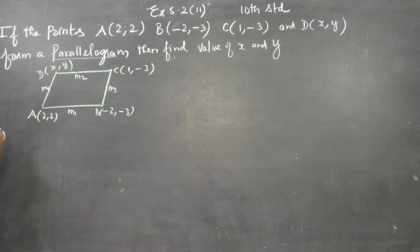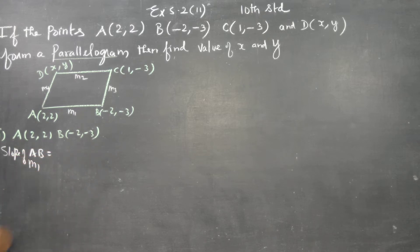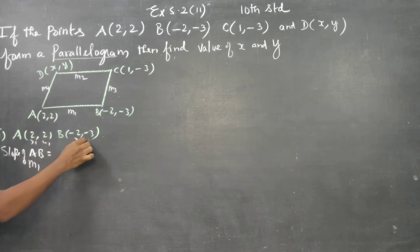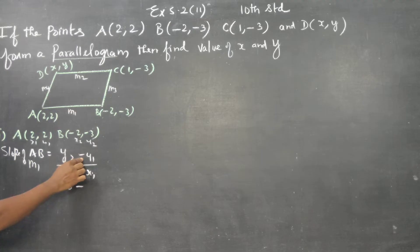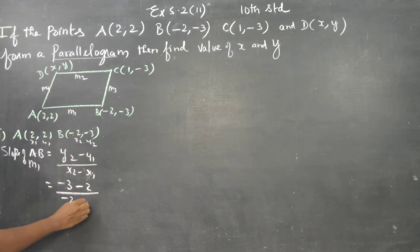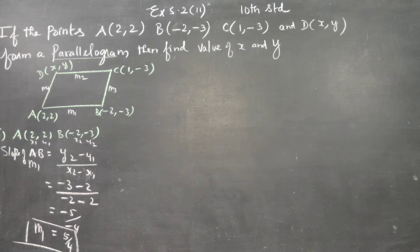We start with slope of AB. A is (2, 2) and B is (-2, -3). Slope of AB, let it be M1. Formula: (y2 - y1) / (x2 - x1). So M1 = (-3 - 2) / (-2 - 2) = -5 / -4 = 5/4. I have found the slope of AB as 5/4.